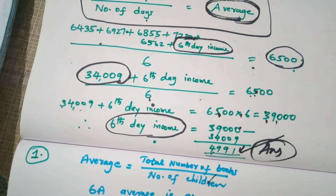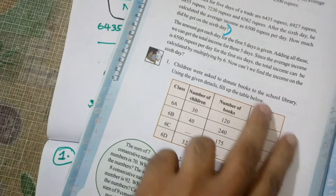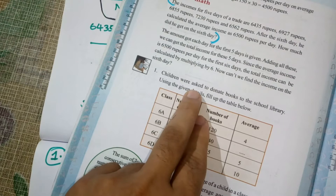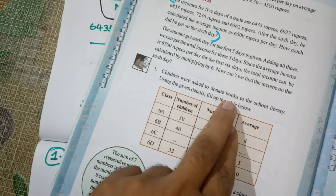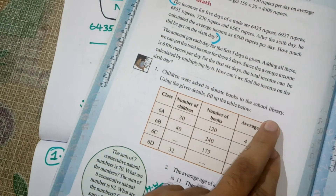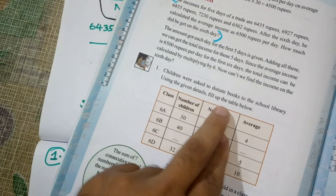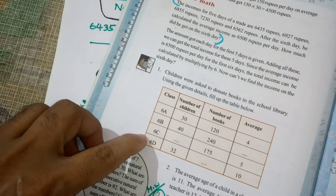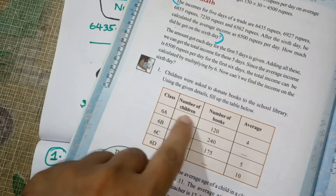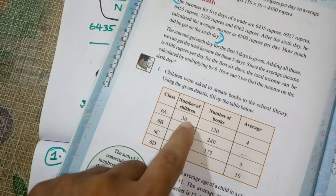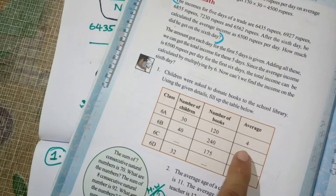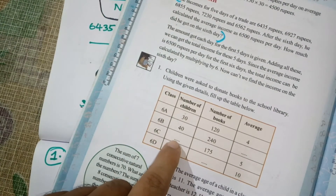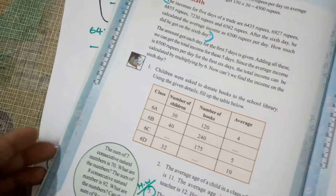This is the page number. This is the table. The children were asked to donate books to the school library. Using the given details, fill up the table below. The columns are RA, RB, RC, and RD — representing the average number of books and number of children.